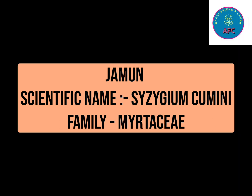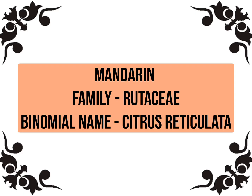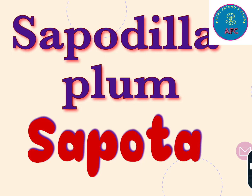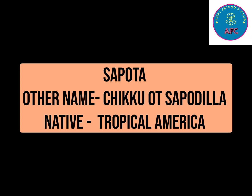Next fruit is fancy fruit or mandarin. The family of mandarin is Rutaceae and the binomial name is Citrus reticulata. Moving on to the next crop, that is sapota, also called sapodilla plum or chiku. This fruit is native to tropical America and it is a tropical crop.